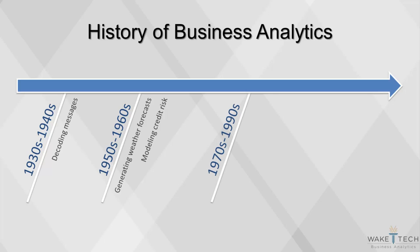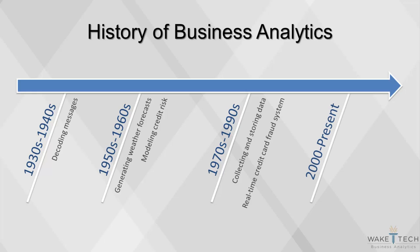Toward the end of the 20th century, as computing power became more affordable, more organizations began collecting and storing data. The types of analytical projects transitioned from being historical in nature to real-time. In 1992, the first real-time credit card fraud system was introduced. Then, the first analytically-centric companies emerged. Companies such as Google use data to build their core product, while other companies such as Amazon use analytical techniques to earn market share from competitors. The rapid ascension of these tech companies has led to an arms race, where all businesses have become committed to analytics.